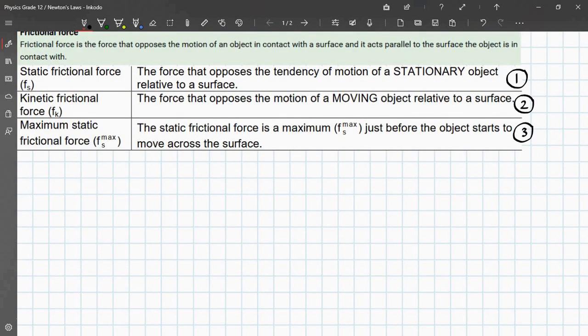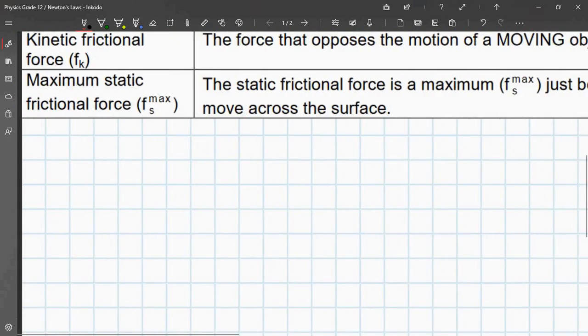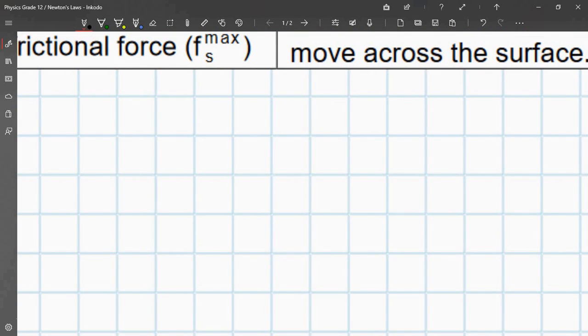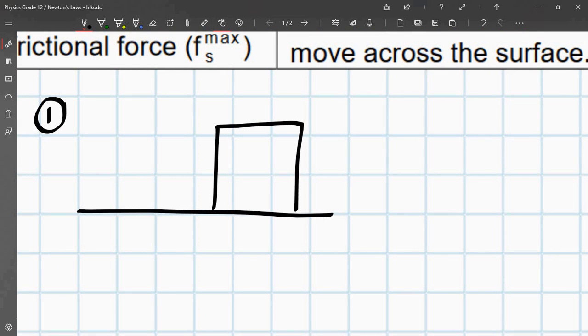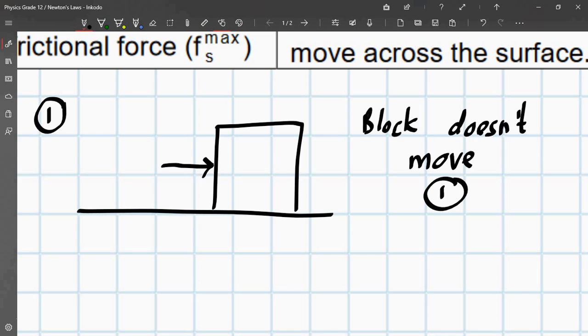So, when an object is stationary, so I've labeled that as number one, so let's just show a small diagram to help you understand this a bit easier. So, number one. So, if there's a block here, and a force is exerted, but the block doesn't move, so block doesn't move,